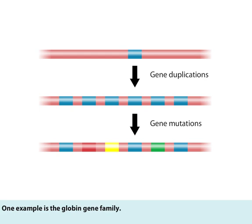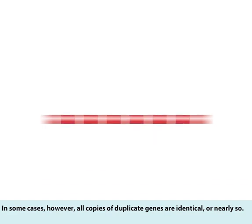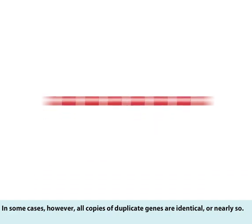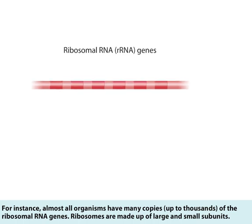One example is the globin gene family. In some cases, however, all copies of duplicate genes are identical or nearly so. For instance, almost all organisms have many copies — up to thousands — of the ribosomal RNA genes.